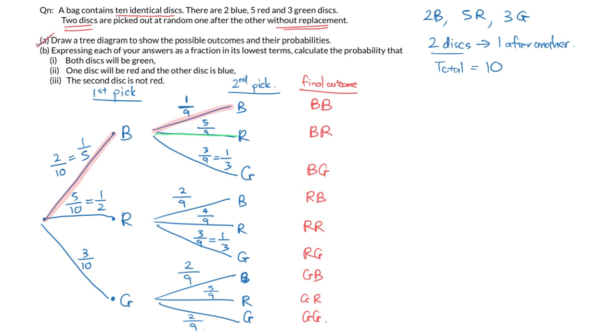I've drawn the tree diagram which shows me all possible outcomes, all possible picks with their probabilities. Now, if I were to go to part B, let's draw a straight line.